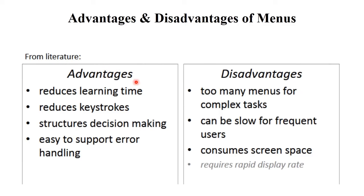The advantages of menu interaction style: it reduces learning time because options are directly given, it reduces keystrokes, it structures decision making with proper logical and sequential groupings, and it easily supports error handling. But there are also some disadvantages: too many menus for complex tasks makes it very difficult to identify options, so the system must be designed so users can easily identify what they need. It can be slow for frequent users, it consumes screen space, and it requires a rapid display rate.